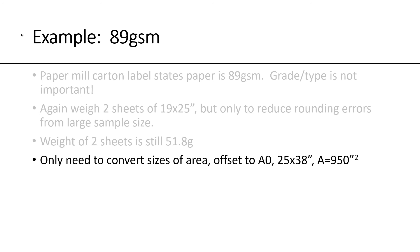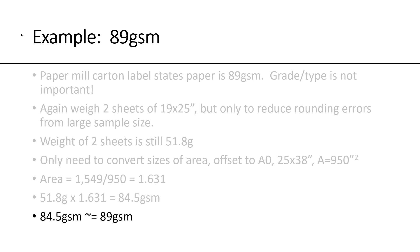The only thing we need to do now is convert the sizes of the areas. We got to convert from offset to A0. Offset's 25 by 38, so its total area is 950 square inches. If you take the 1,549 and divide by the 950, you get a conversion factor of 1.631. So if you take the 51.8 grams and multiply it by the conversion factor of 1.631, you get an answer of 84.5 GSM, which is very close to 89 GSM. Certainly within the tolerance limits of the stated paper mill variation.